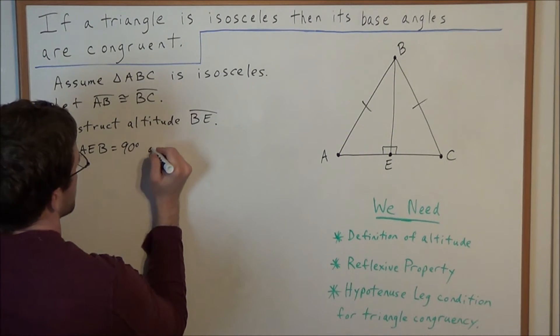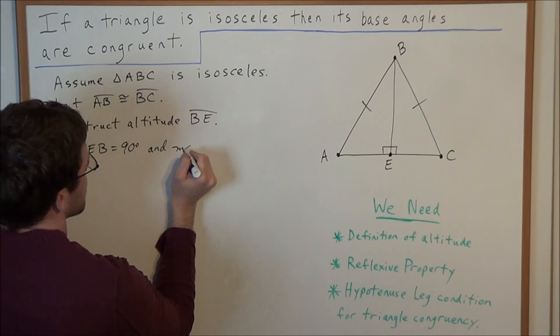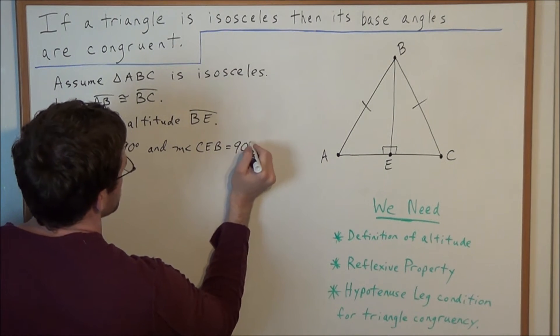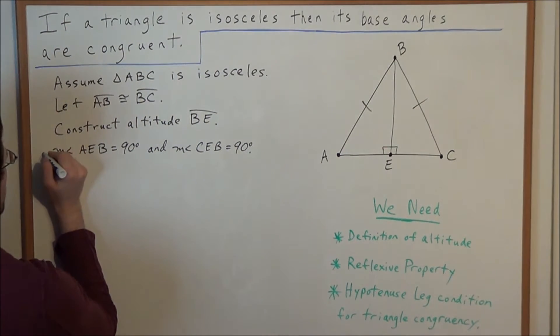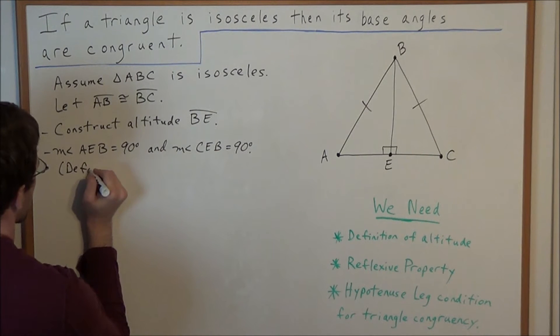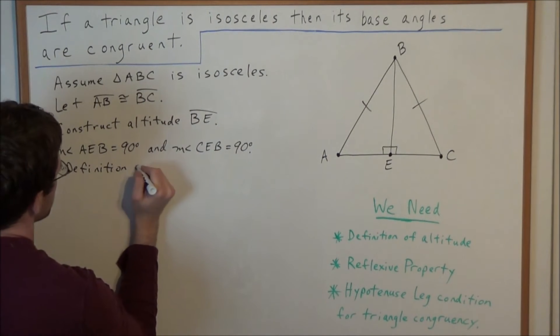and the measure of angle CEB also equals 90 degrees. Remember, this comes directly from the definition of an altitude.